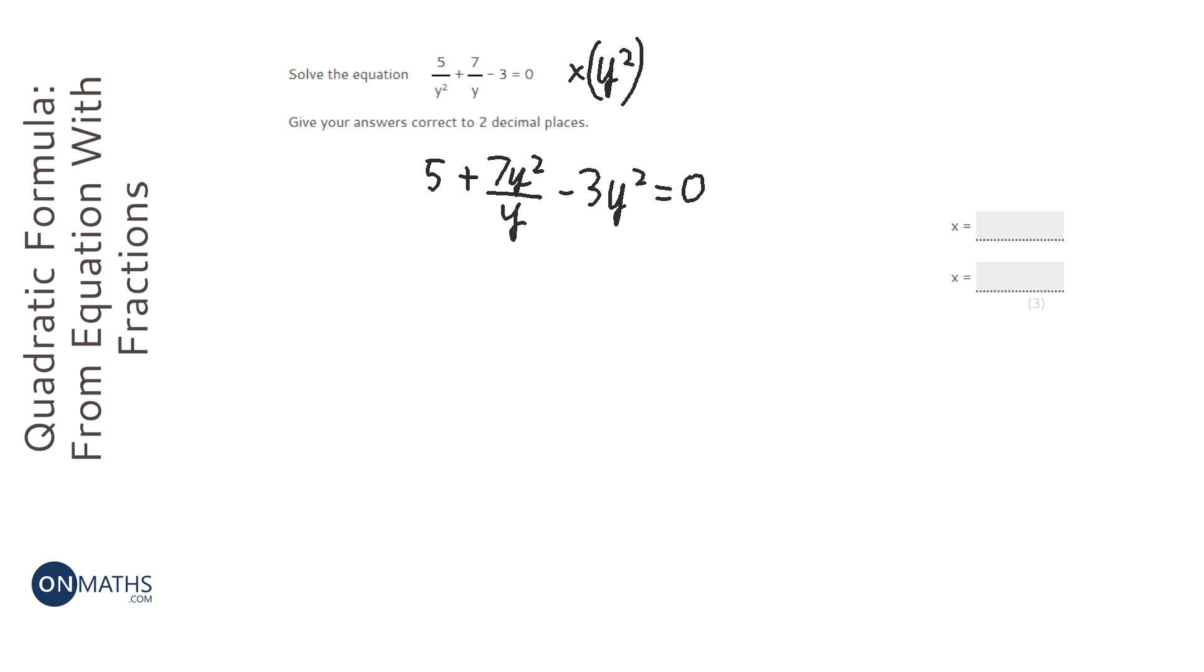Now the y at the bottom and one of the y's at the top cancel. So we end up with 5 plus 7y minus 3y squared. And since we'll use the quadratic formula on this, it's probably easier to put it in order. So that would be minus 3y squared plus 7y plus 5 equals 0.